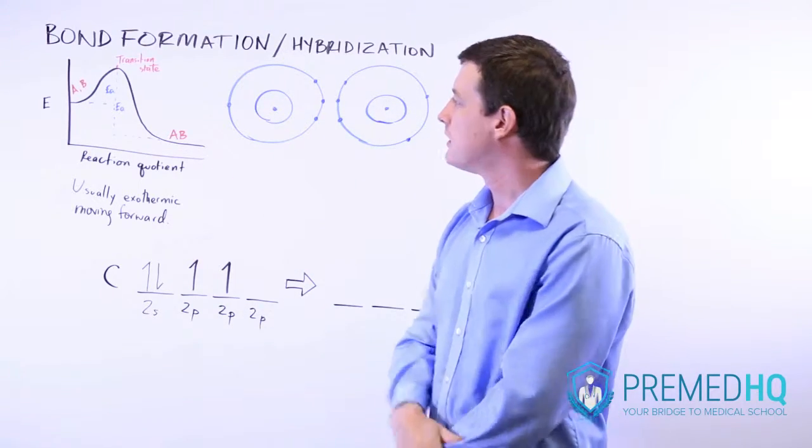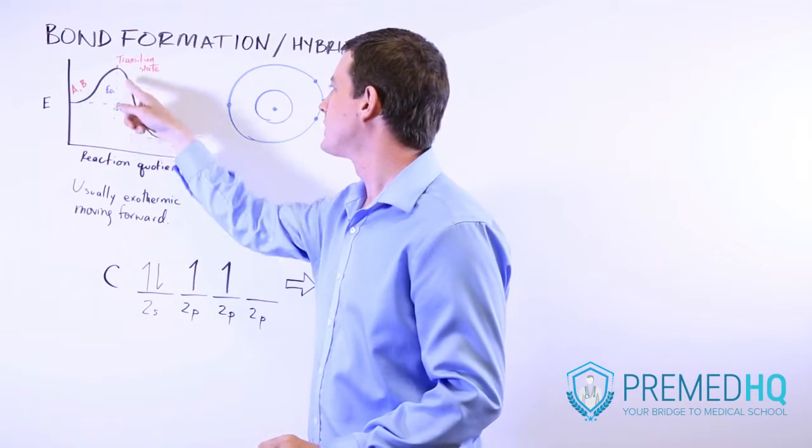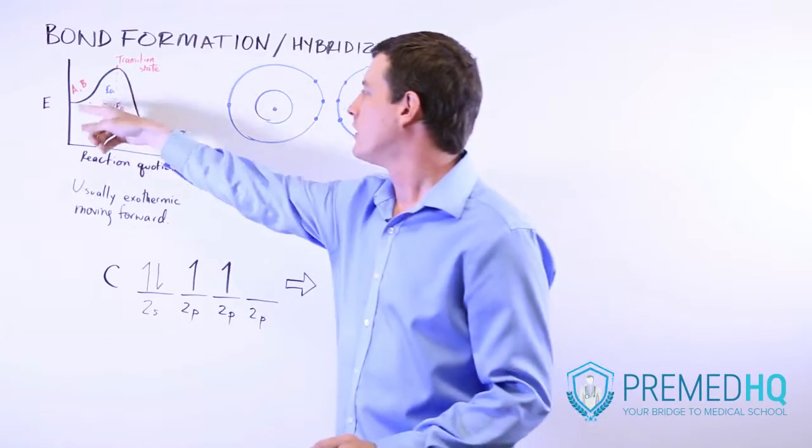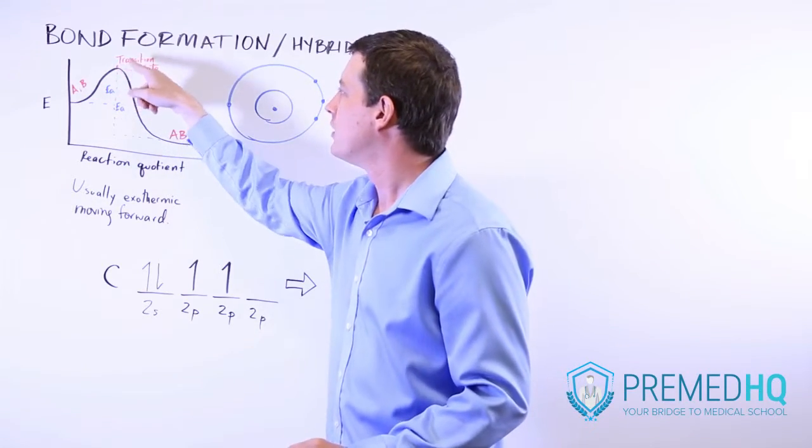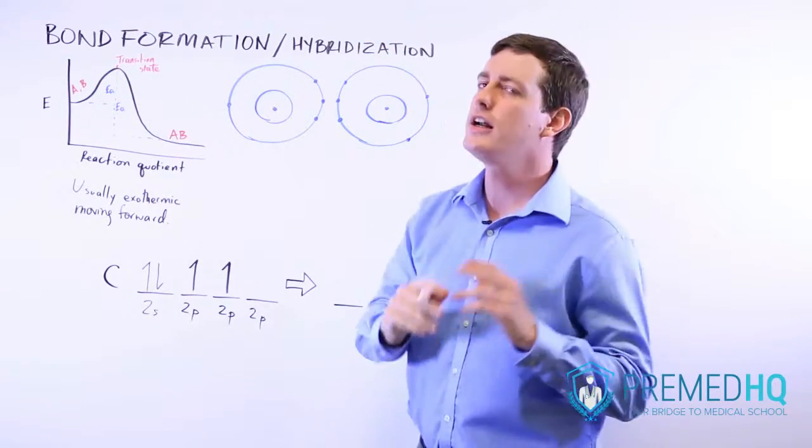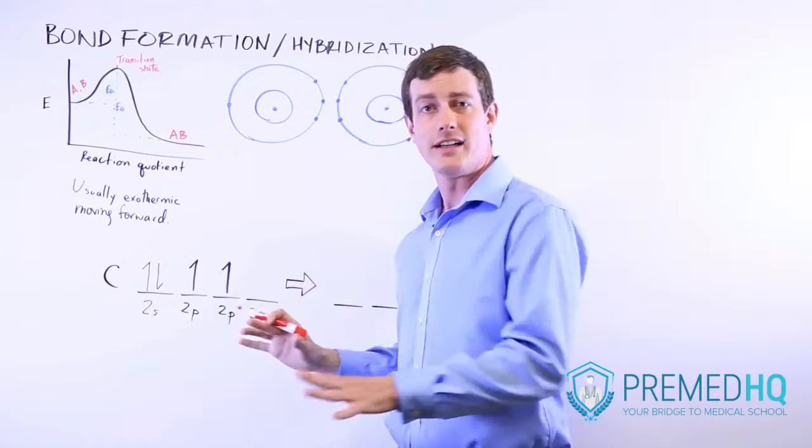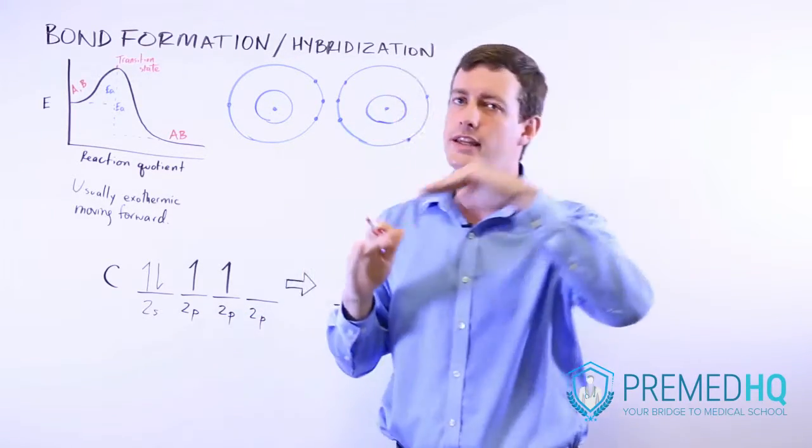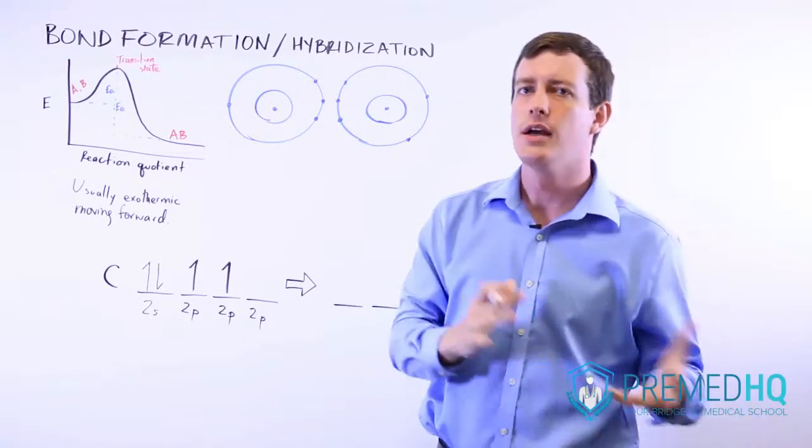The first thing to realize is that you have this energy level which is known as the activation energy, and that's the energy required for these two atoms to reach their transition state where they're not yet bonded but they're not completely unbonded, and that allows them to reach an energy threshold where then they can release a lot of energy by bonding.